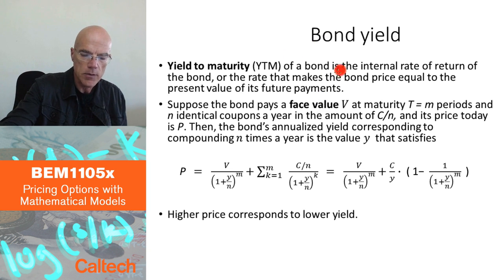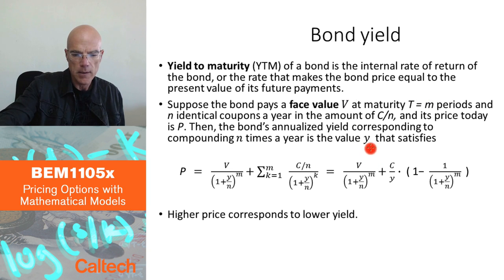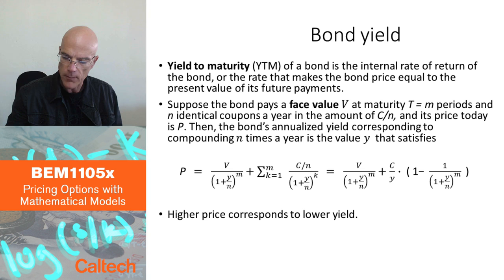The idea is to make the bond price equal to the present value of its future payments. A little bit of notation here: There is the face value of the bond, denoted by capital V, that's paid at maturity. Maturity is assumed to be M periods from now, where the periods are the coupon paying periods. There are N identical coupons per year, each coupon in the amount of C over N, where capital C is the total amount of coupon per year. P is the notation for the bond price.